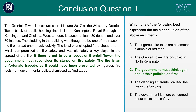The answer you should have gotten is C: 'The government must think again about their policies on fires.' C is the main conclusion because the author is hinting at the fact that the government played a role and could have played a role in preventing what happened at Grenfell. This question you can actually answer by using the process of elimination, and we'll see why that is the case.